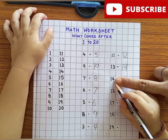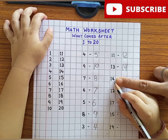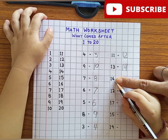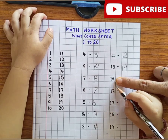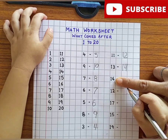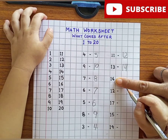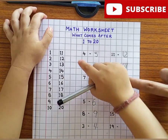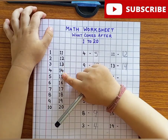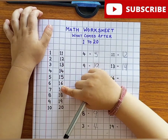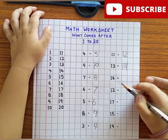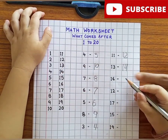Very good. Next number is? 16. What comes after 16? 17. Find number 17. Very good. Right here.